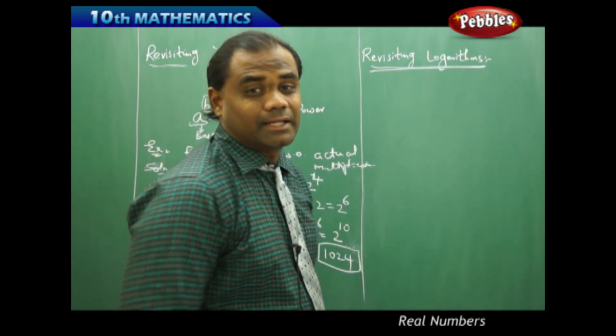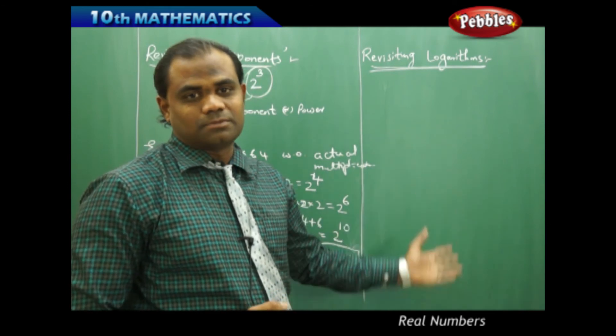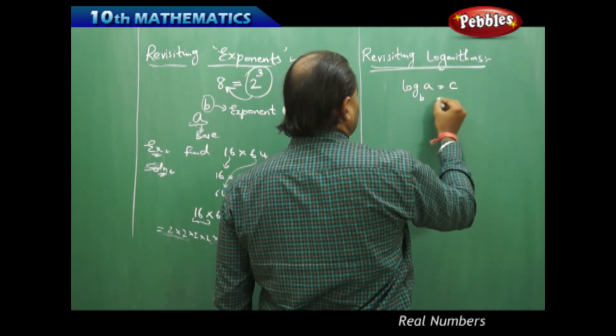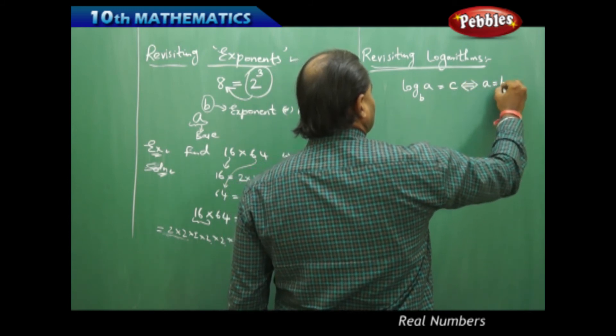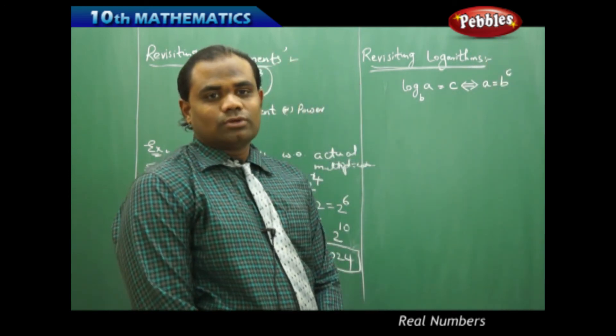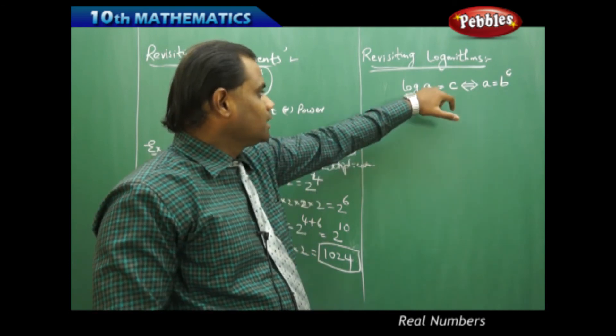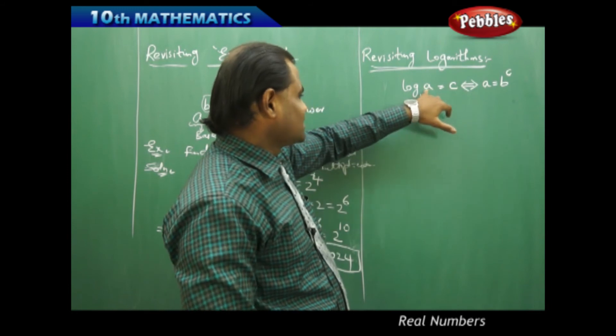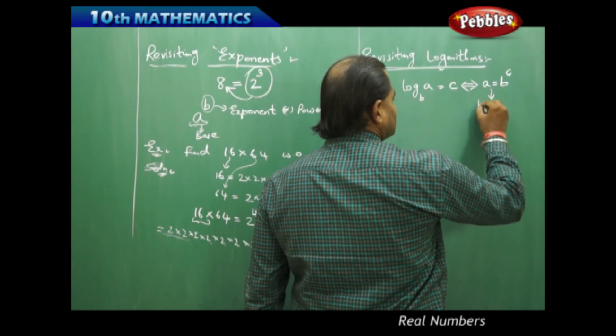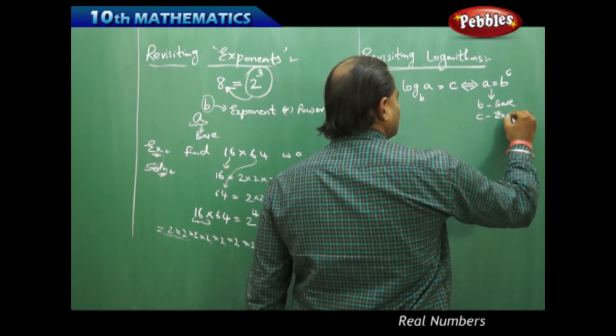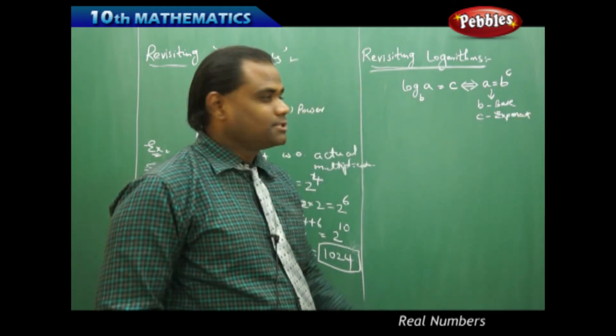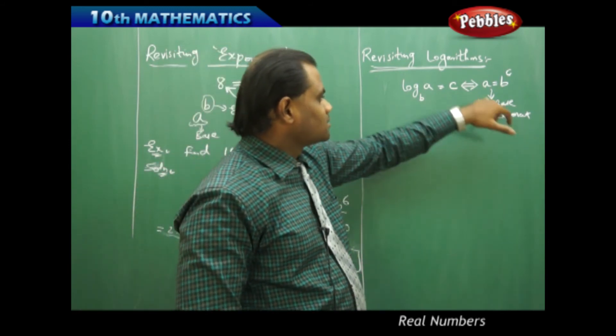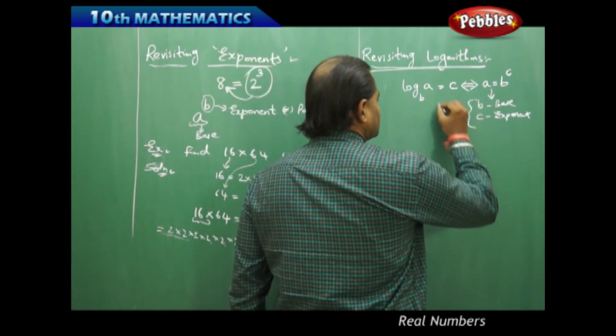So revisiting logarithms, I just have one of the most important property which connects logarithms with exponents. These are the two important formulae which connect the exponents with logarithms. That is, when log a to base b is c, the value of log a to base b is c, then when you convert this to exponential form, it is indirectly read as a equal to b power c, where here b is the base and c is the exponent. Therefore, when I connect this with the left hand side of the property, I see that the base will be the base of the logarithm and the exponent will be the value of the logarithm.